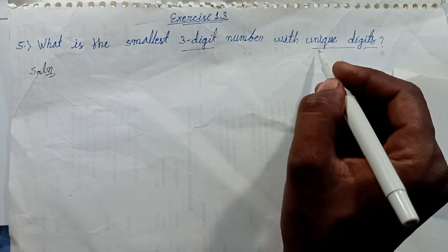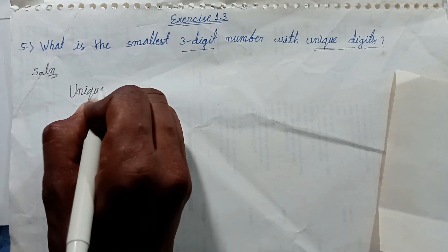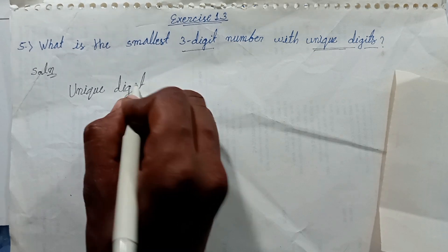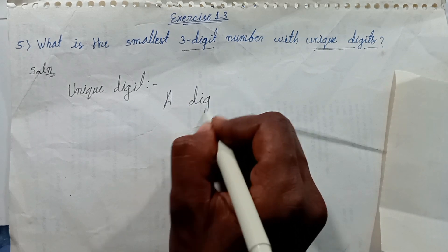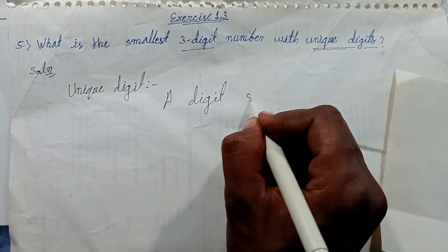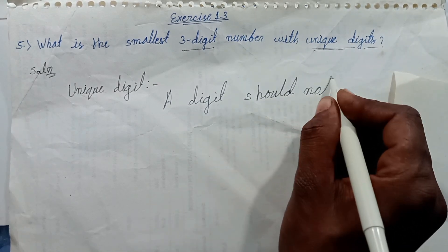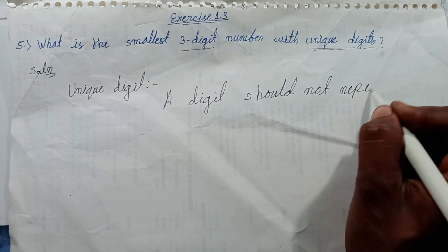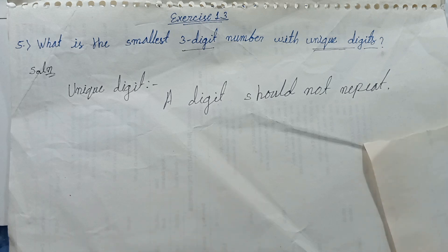What is a unique digit? A unique digit is one that shall not be repeated. Any digit in a number should not repeat.